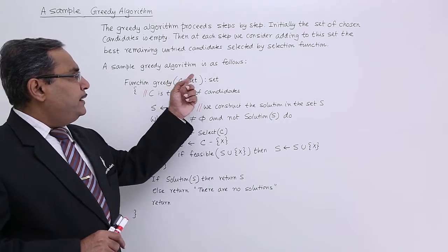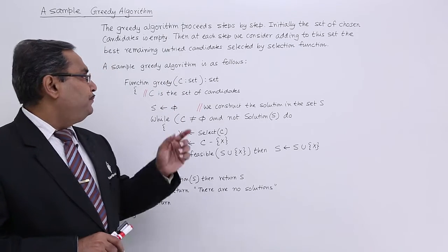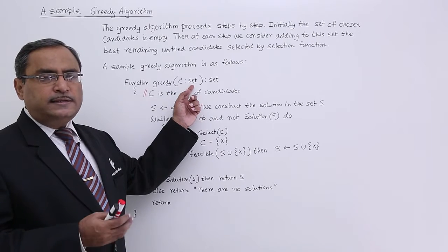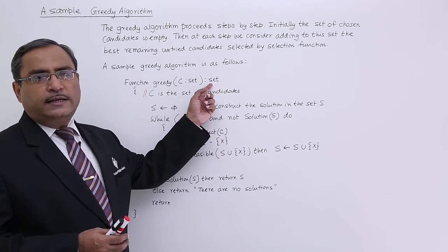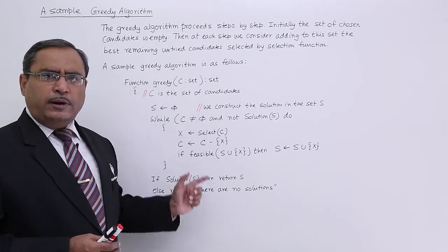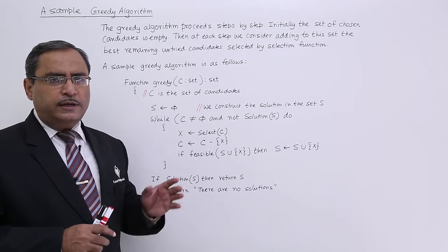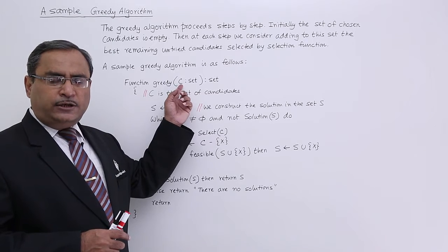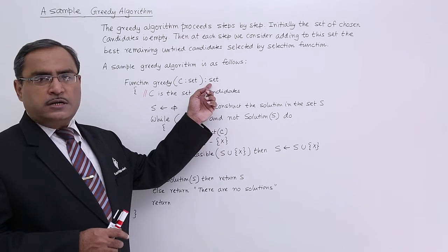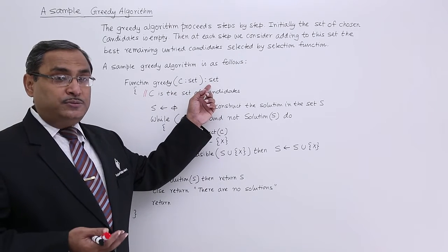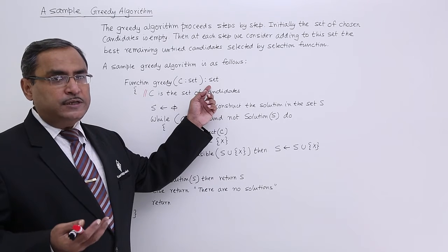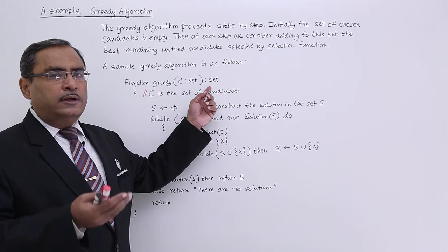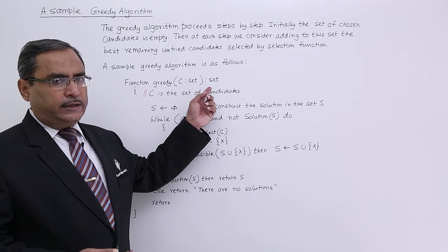The sample greedy algorithm is as follows. The function greedy takes C — a set of candidates — as input and returns a set. It will return the set where candidates have been tried and also selected.